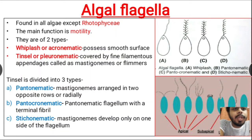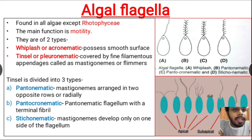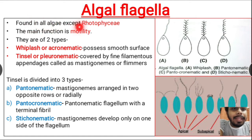Today we are going to discuss algal flagella and their different types. Flagella is a thread-like structure which helps the cell in movement. Their function is to move the cell from one area to another. Algal flagella are found in all algae except Rhodophyceae, that means red algae — so except red algae, flagella are present in all other algae.